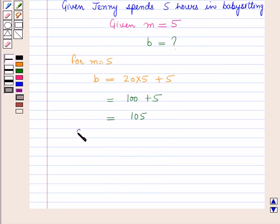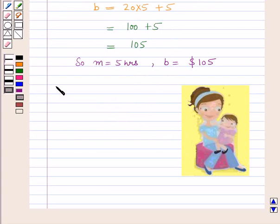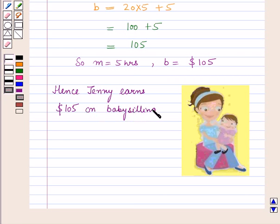So for M equals 5 hours, B equals 105 dollars. Hence Janie earns 105 dollars on babysitting for 5 hours.